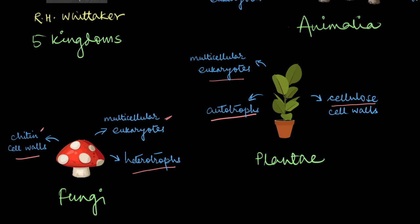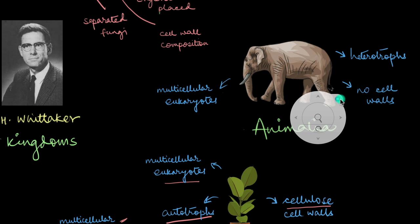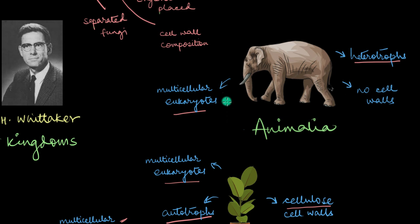The fifth kingdom is Animalia, the kingdom of animals. All animals are exclusively heterotrophic multicellular eukaryotes. They are the most complex organisms to ever exist on our planet. And as you have probably guessed by now, animals don't have any cell walls.